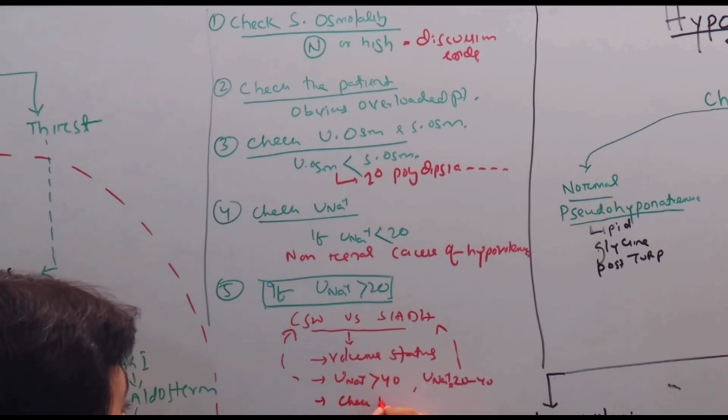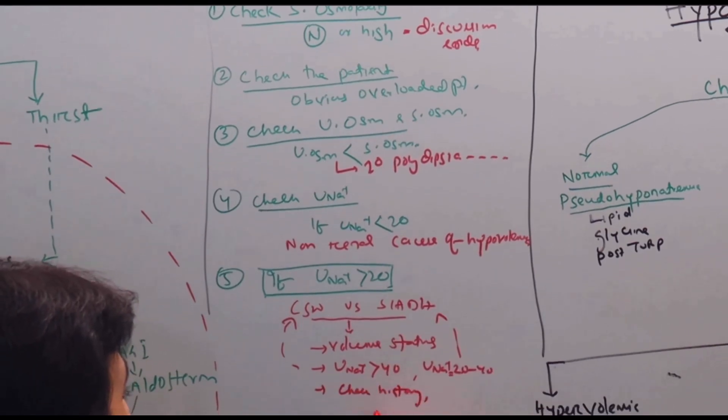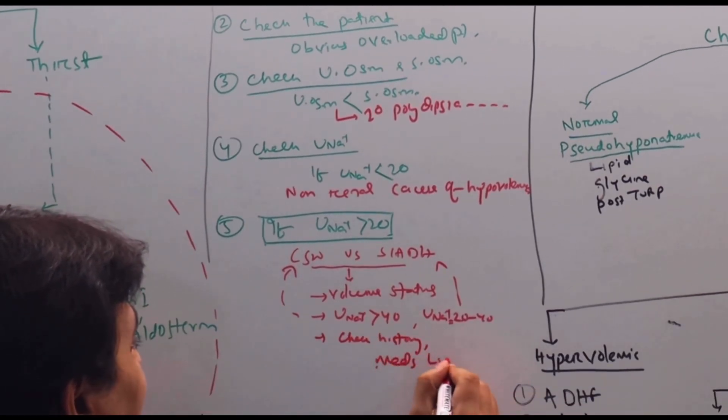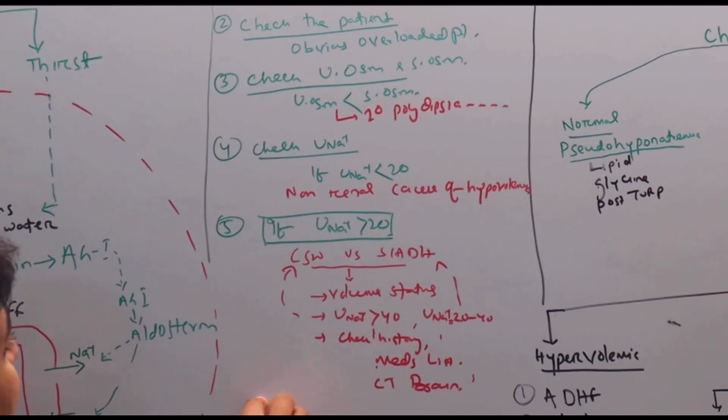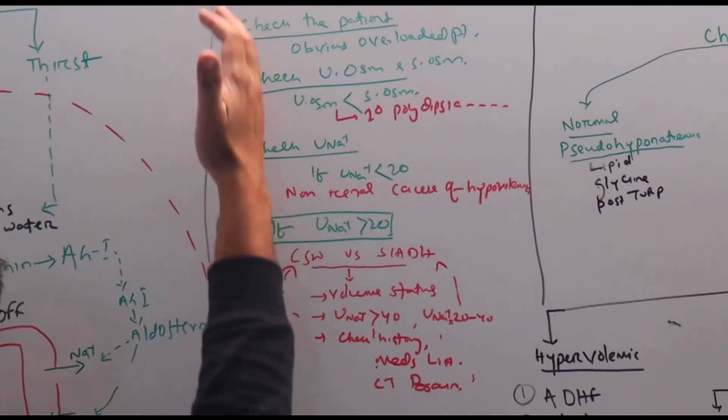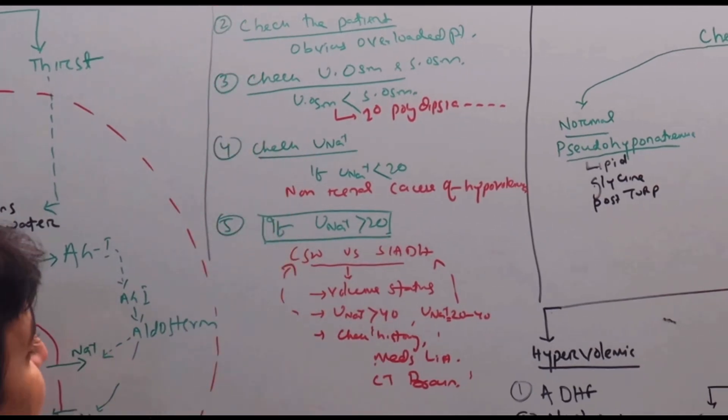Check history, meds list, check CT brain for brain pathology. It is only at this point we have an ambiguity. Otherwise, if we follow this five-step formula, we will absolutely reach a diagnosis.